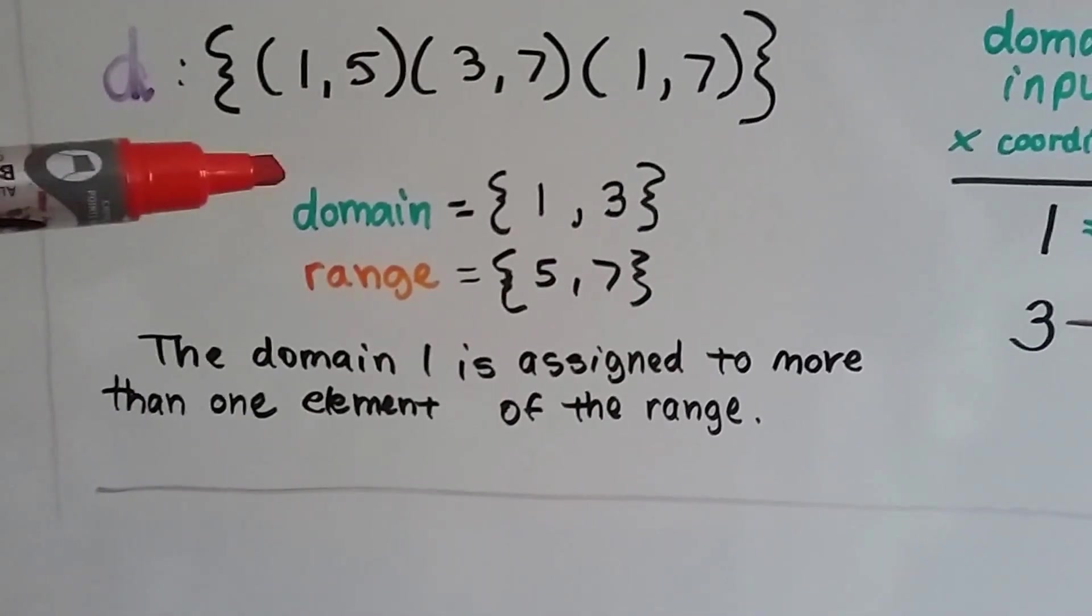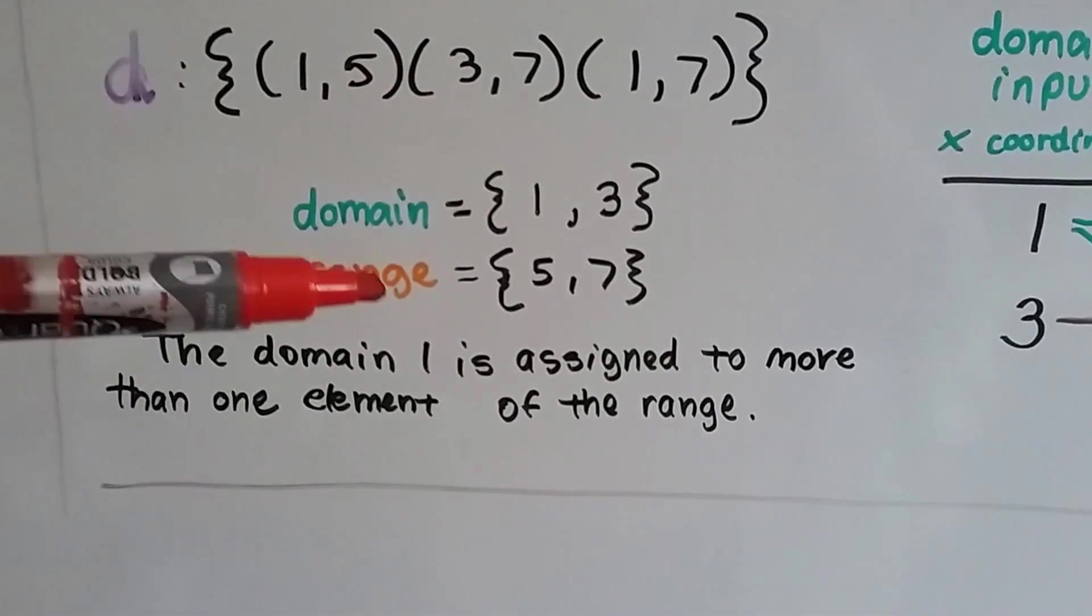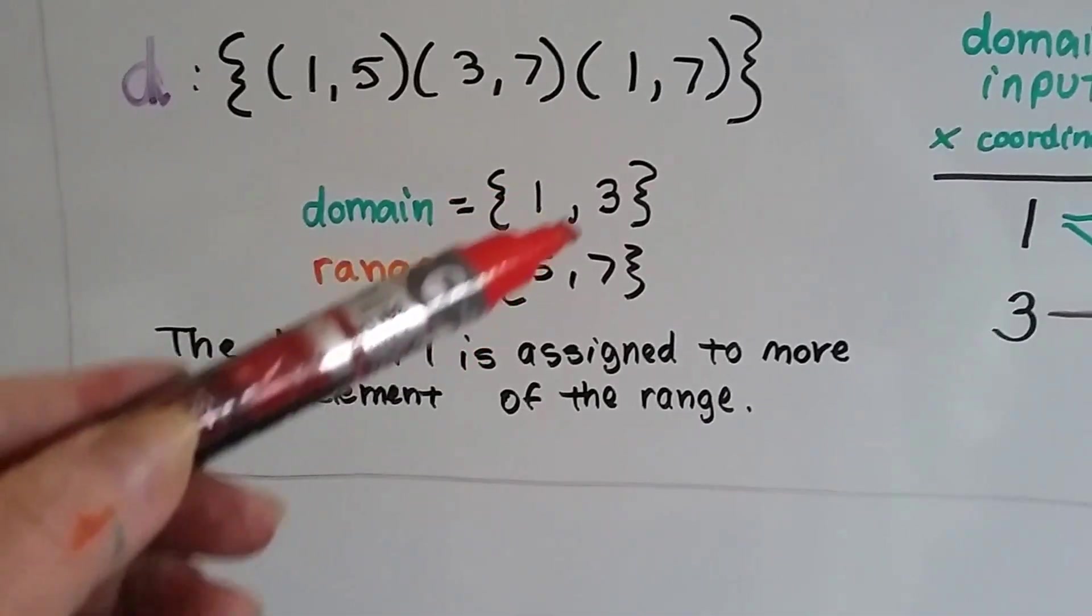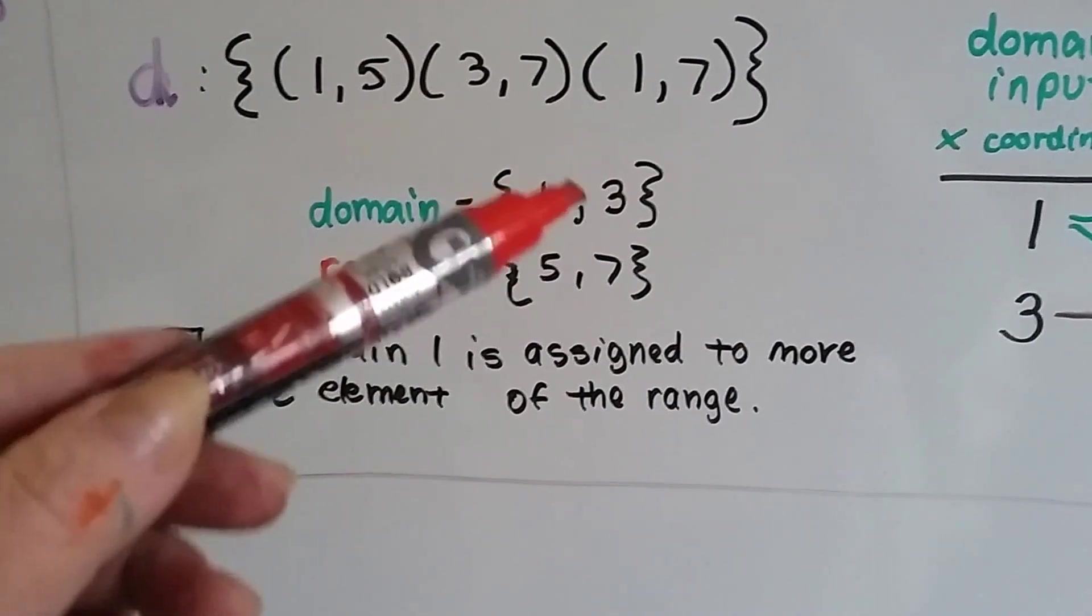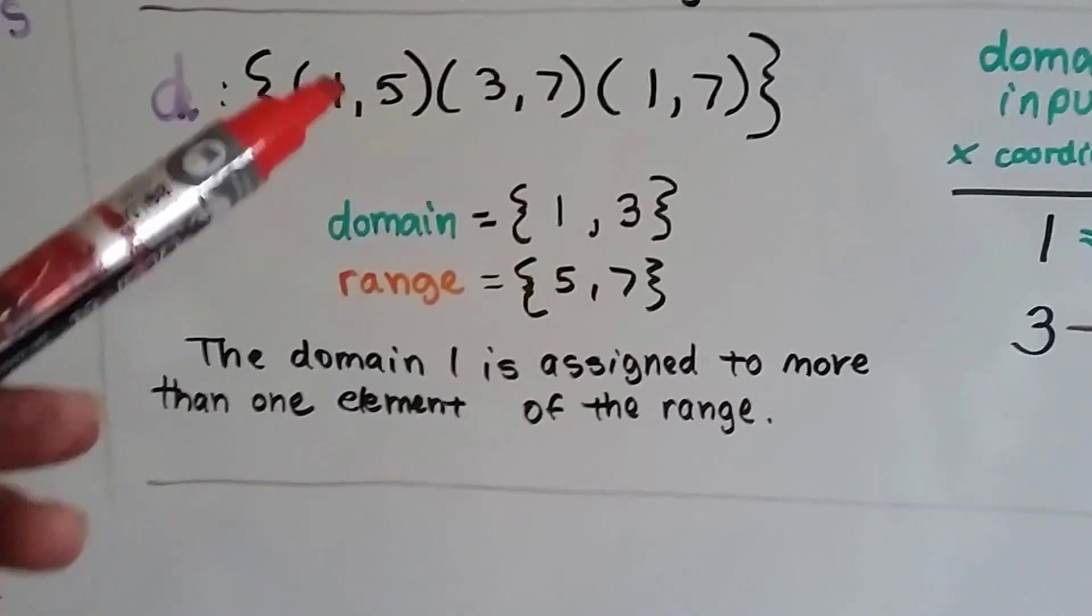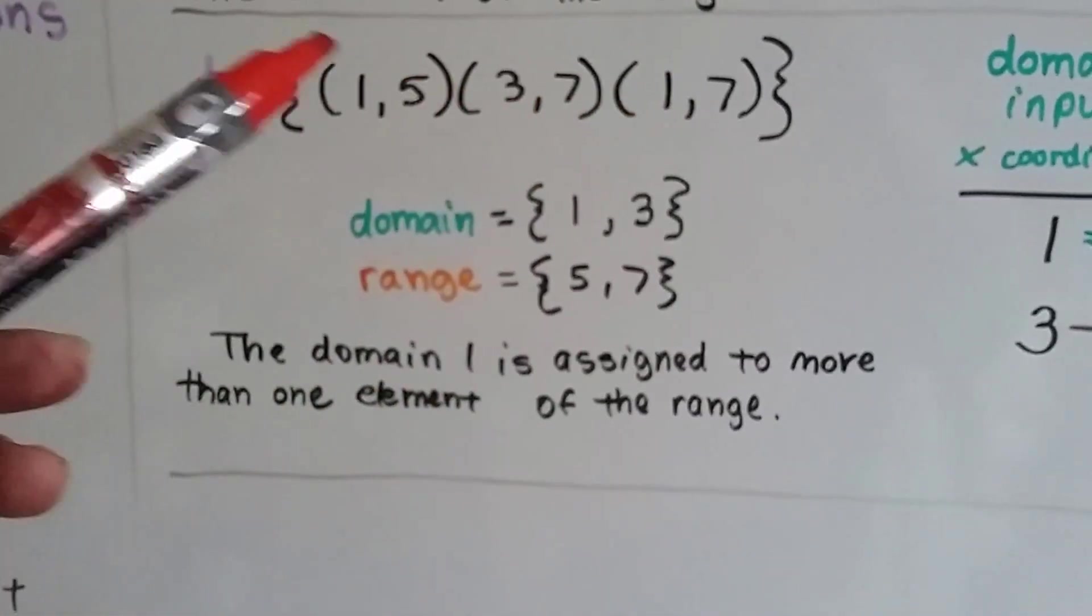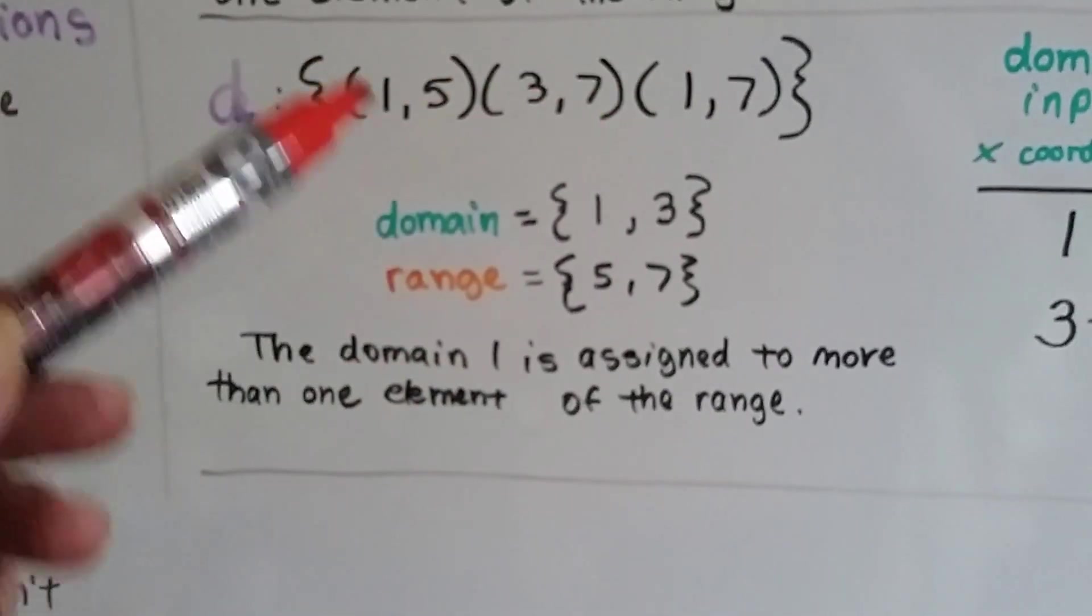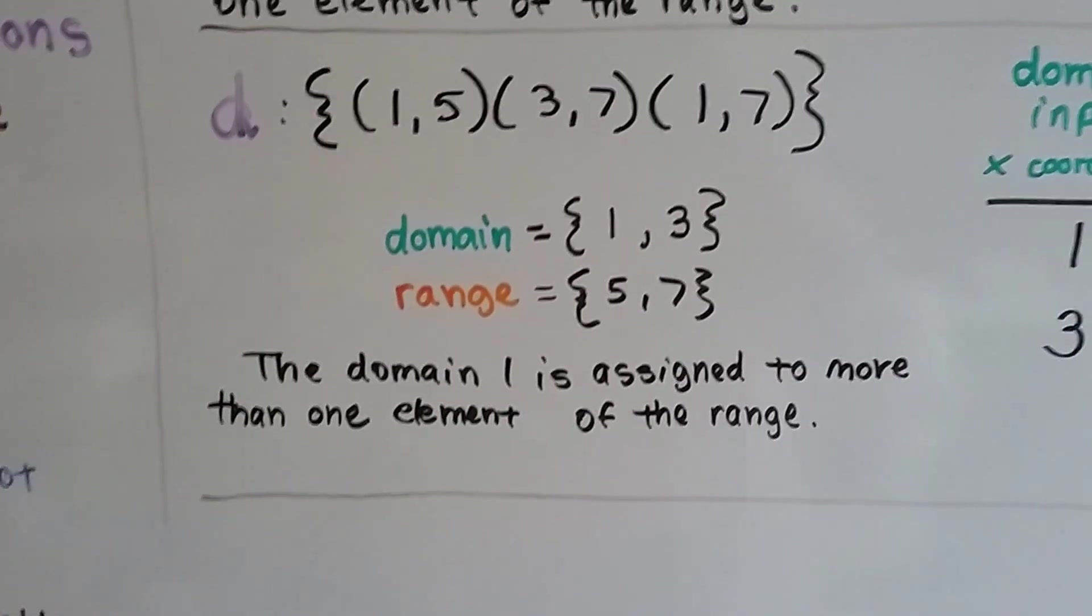Our set of domain is 1, 3 and our range is 5, 7. And, because there's only two numbers in this set and two numbers in this set, but we have three inside of here, that right there tells you something's wrong.